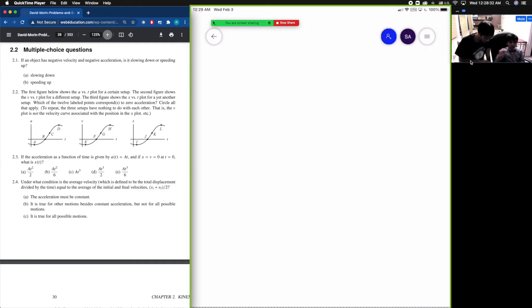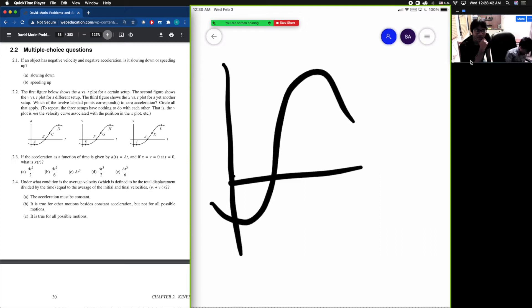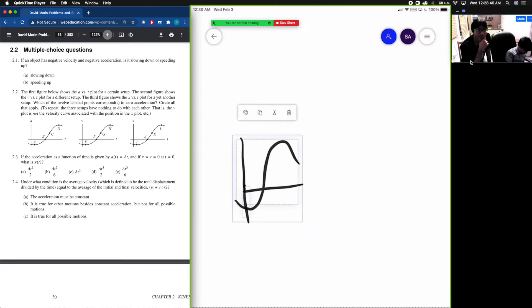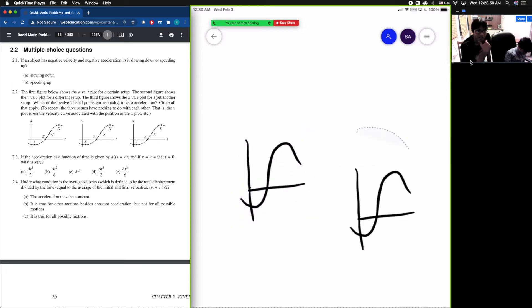The first figure below shows the A vs T plot for a certain setup. So let me draw that. I'll read the remainder of the problem. The second figure shows the V vs T plot for a different setup. The third figure shows the X vs T plot for yet another setup. Which of the 12 labeled points corresponds to zero acceleration? Circle all that apply.